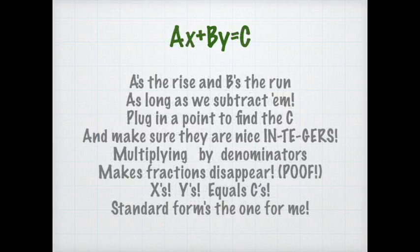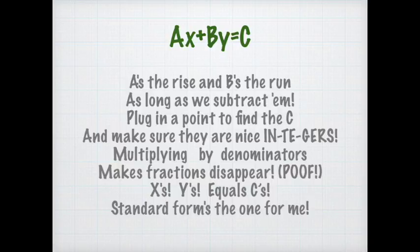A's the rise and B's the run, as long as we subtract them. Plug in a point to find the C, and make sure they are nice integers. Multiplying by denominators makes fractions disappear. Poof — x's, y's, equals C. Standard form's the one for me.